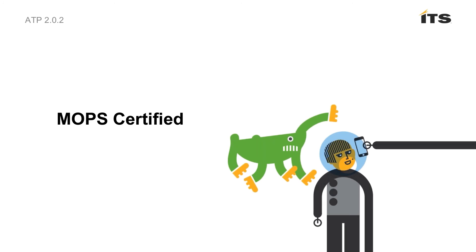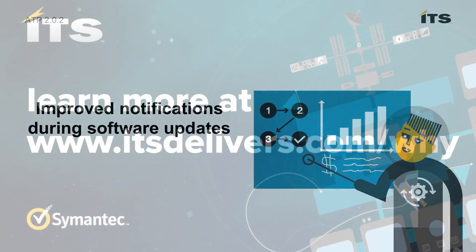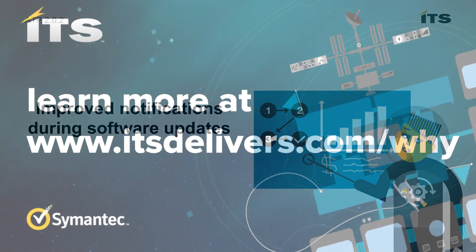ATP has achieved certification from China's Ministry of Public Security, also known as MoPS. Additionally, notifications during software updates have been improved. When you perform an update of ATP, the update process now notifies you of error conditions, and the status of the update can be checked through the update status command.